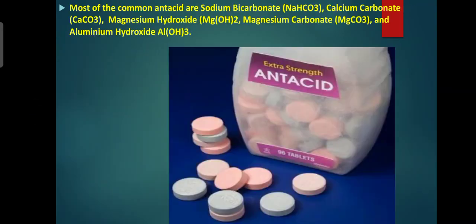The most common antacids are sodium bicarbonate, calcium carbonate, magnesium hydroxide, magnesium carbonate, and aluminum hydroxide. The chemical reaction that occurs when magnesium hydroxide neutralizes hydrochloric acid in the stomach and intestine is a key example of neutralization — a chemical reaction in which an acid and a base react quantitatively with each other.